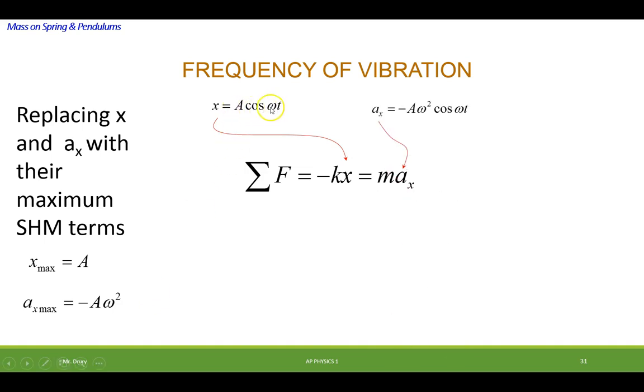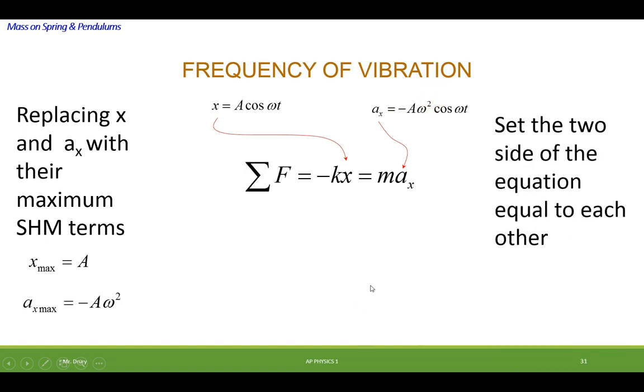And they come from these two equations. Here, if this term is 1, then A is equal to the maximum displacement. And if this term ends up being 1, the maximum acceleration is minus A omega squared. So if I put the two terms in, and set the two sides equal to each other, the negatives cancel out. The A's cancel out. And I'm left with omega equals square root of k over m. Okay? And this is the formula that they talk about in the book.